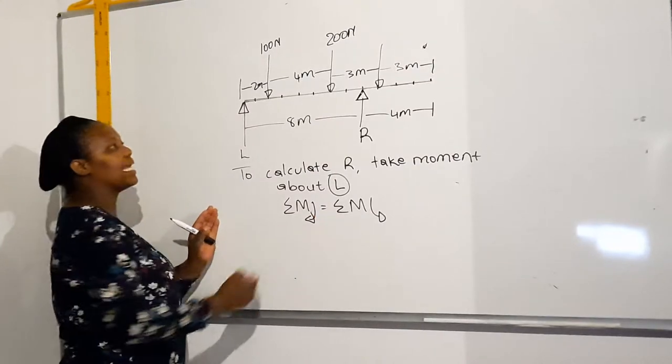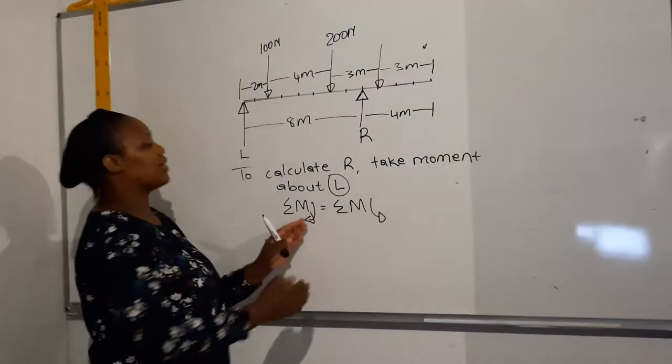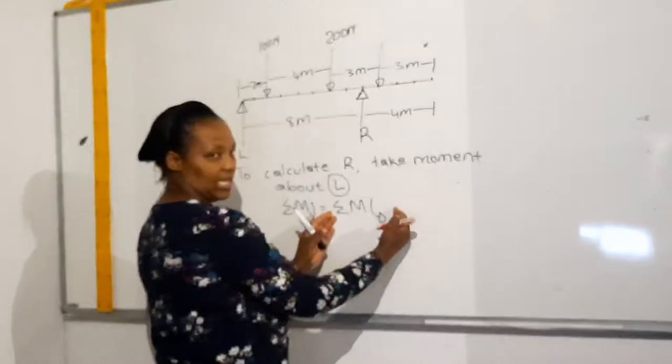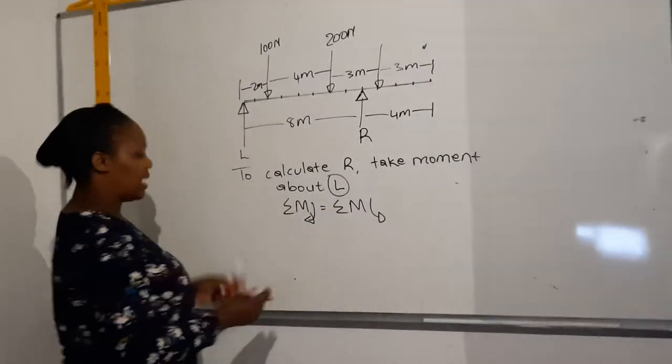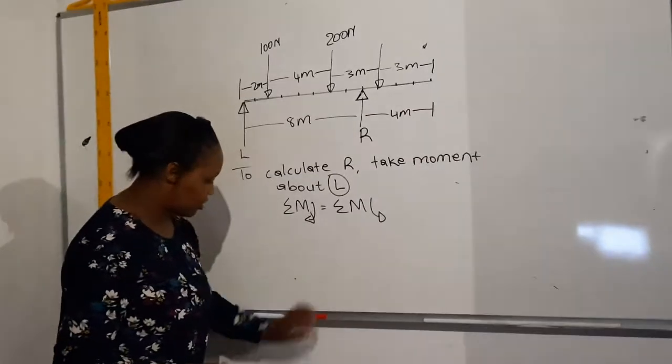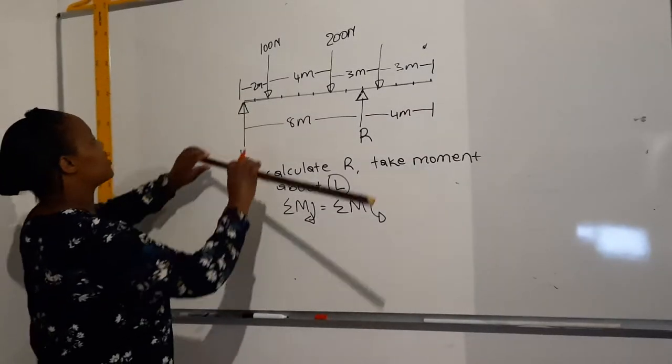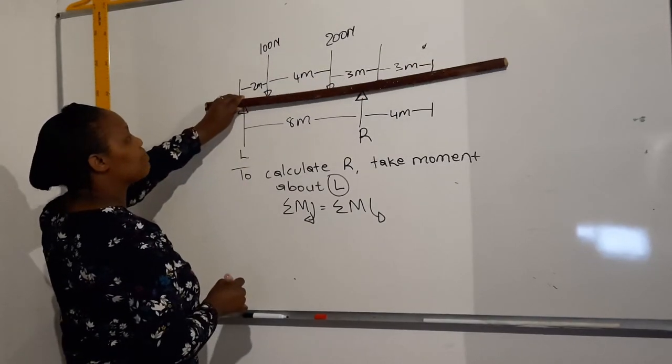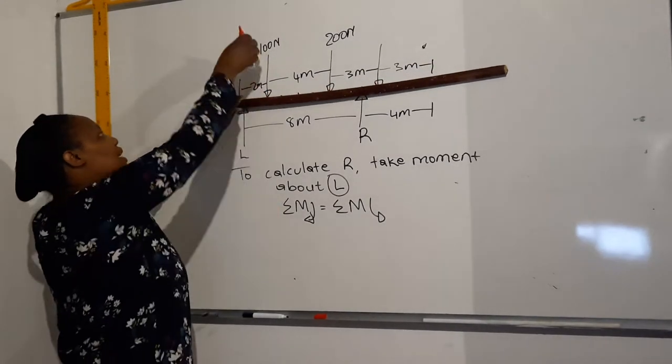You can have them on the left hand side of the equal sign, and then which forces will give you an anti-clockwise moment so that you can have them on the right hand side of the equal sign. You can test your moments. For instance, if you're looking at L, if you say L is your pivot, it means your beam is pinned at L.